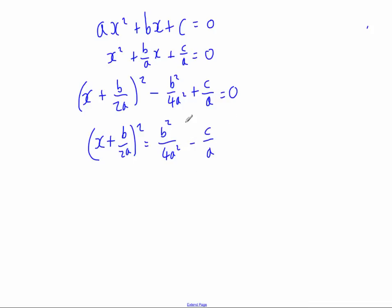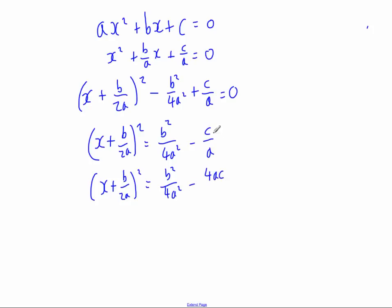Next I'm going to work out this sum on the right-hand side — subtracting c over a from b squared over 4a squared — so I need a common denominator. It's still x plus b over 2a, close bracket, squared equals. The denominators are 4a squared and a, so I multiply the top and bottom of c over a by 4a, making the denominator 4a squared and the numerator 4ac. Combining into a single fraction gives b squared minus 4ac all divided by 4a squared.